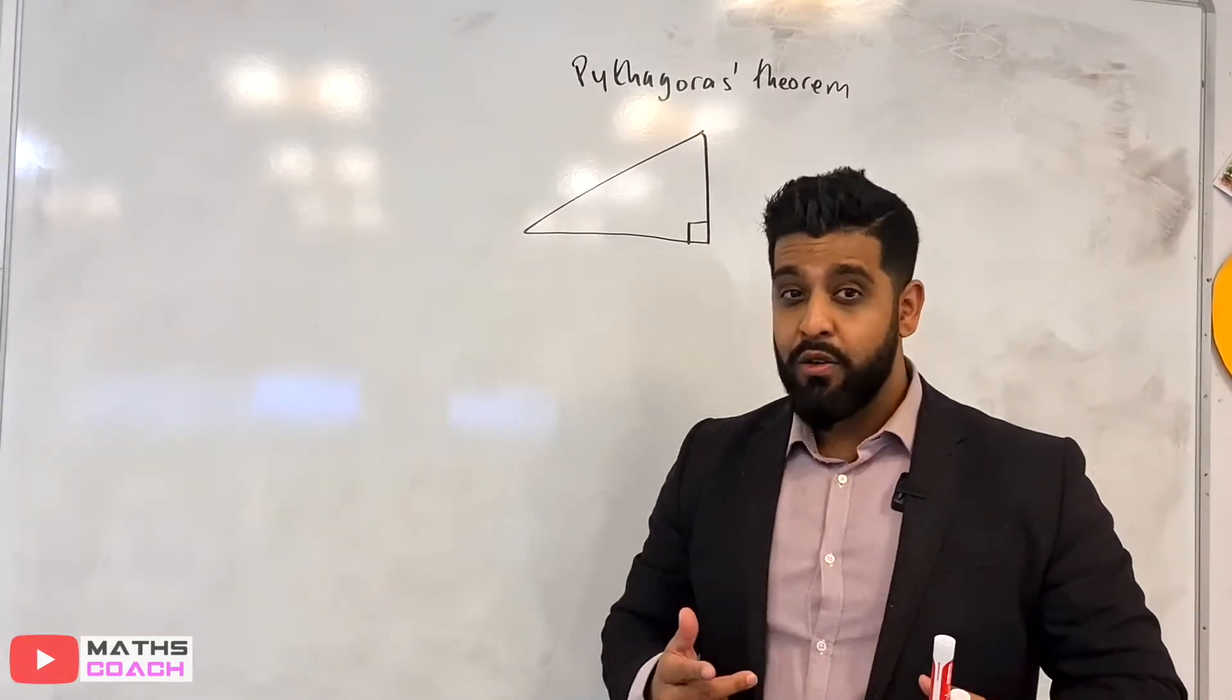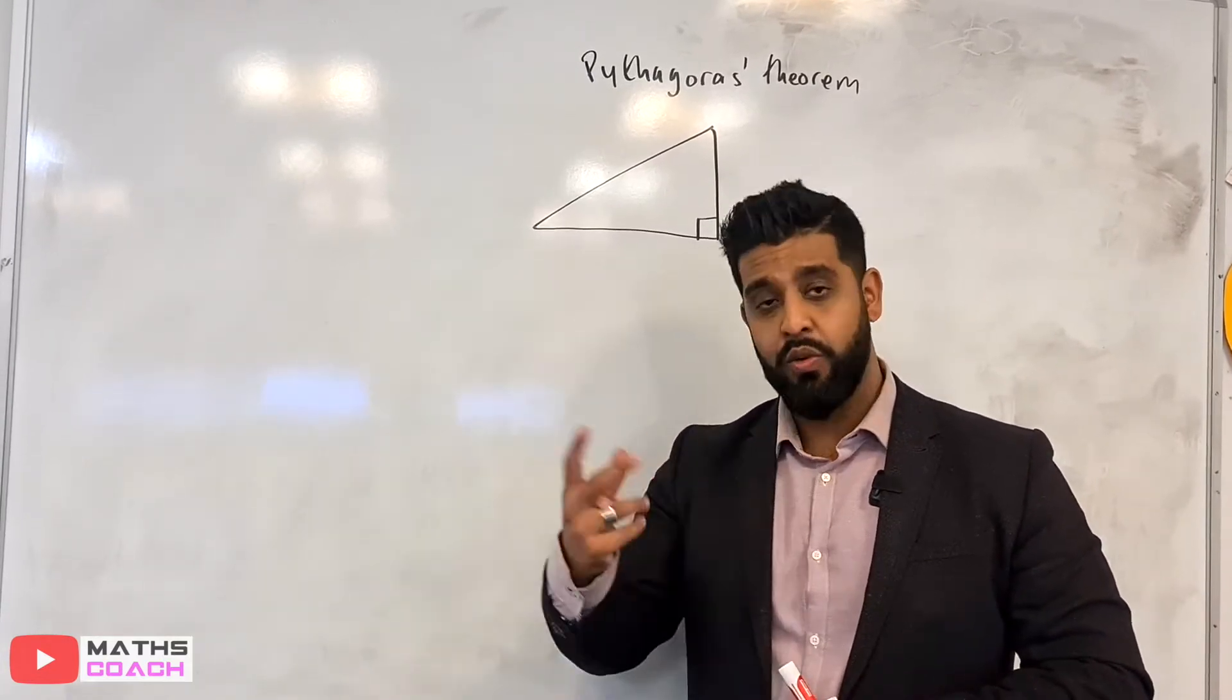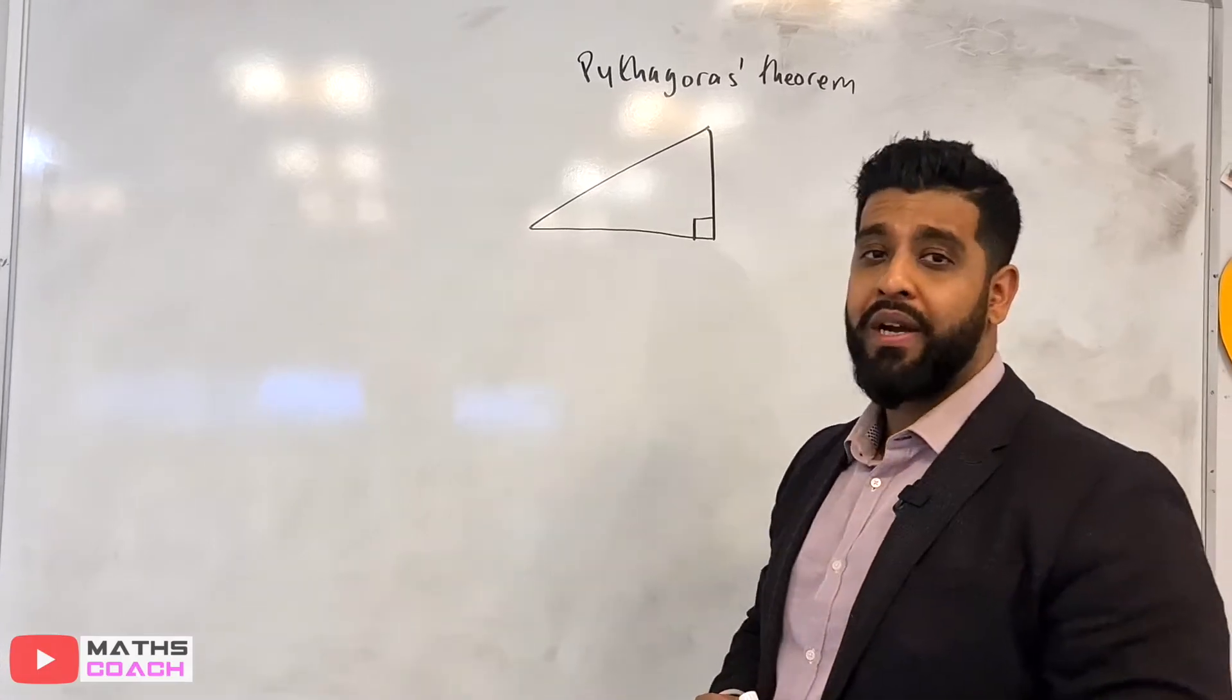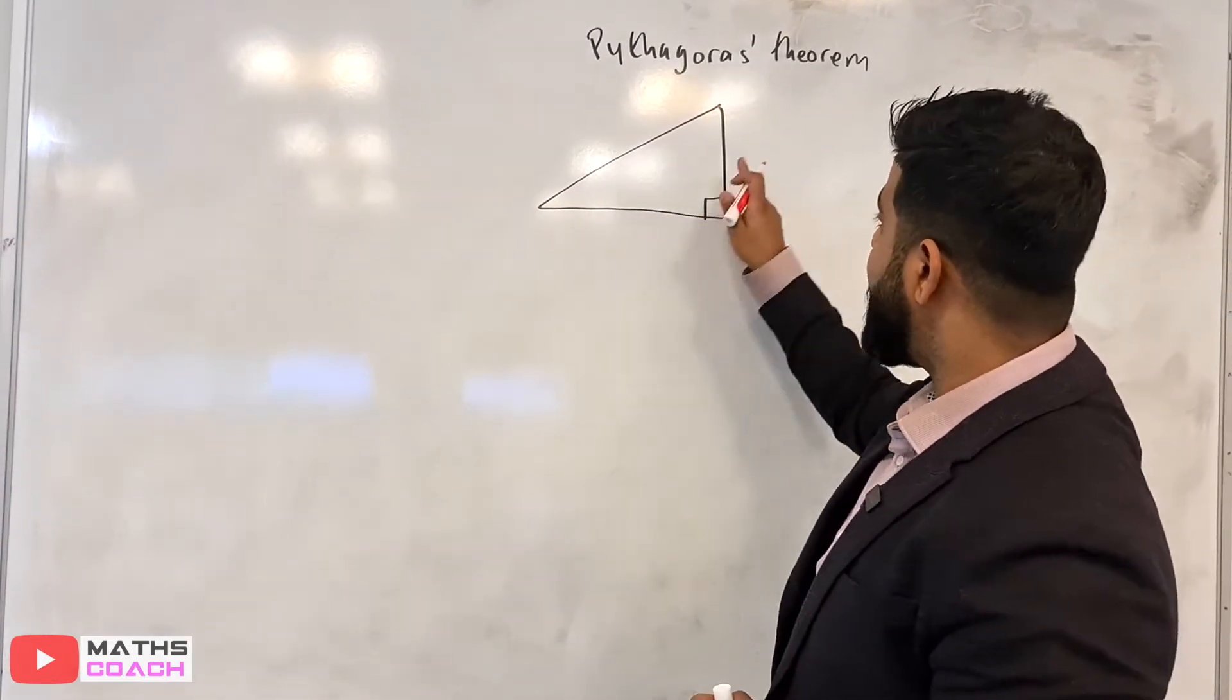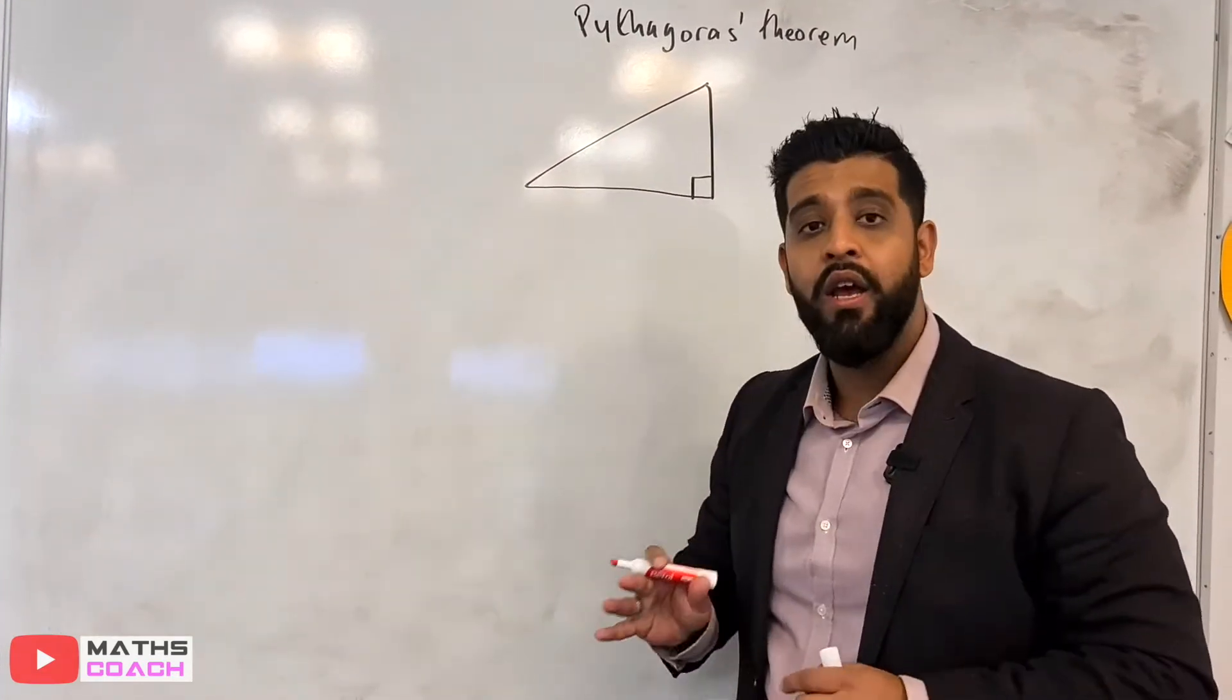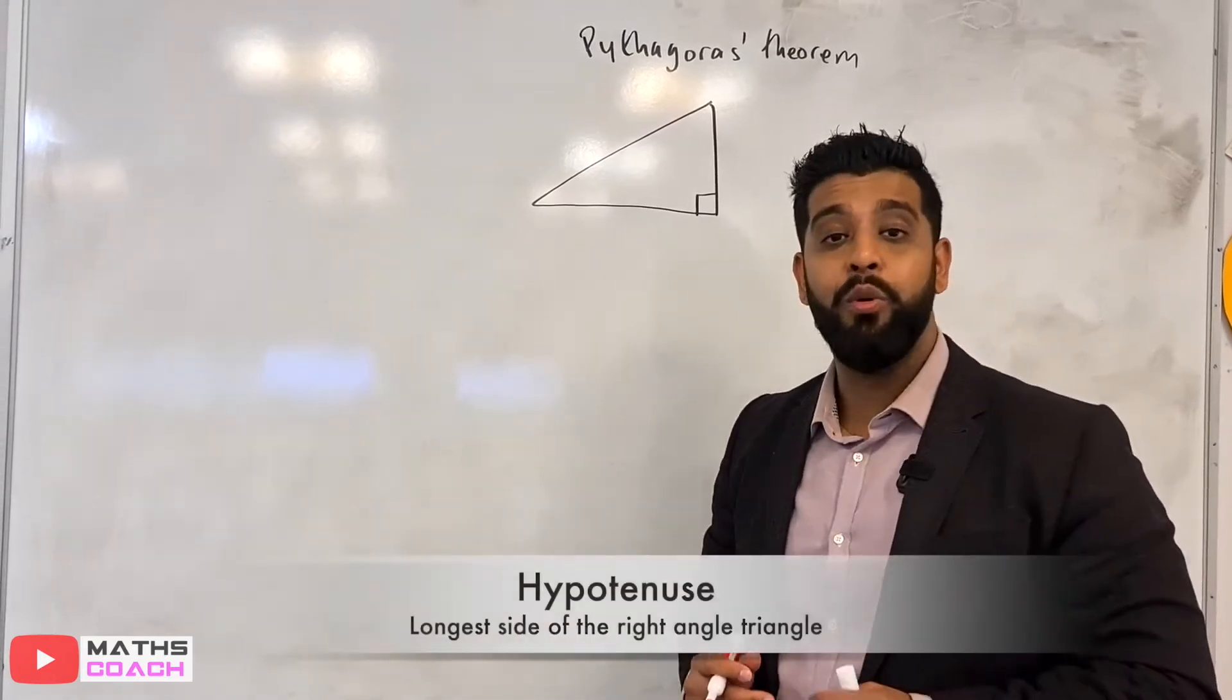If there are any angles involved, then it's usually using trigonometry, which I will deal with in an alternative video. So what is Pythagoras' theorem? Pythagoras' theorem is where Pythagoras has said that if you take the square of two of the smaller sides, then it should give you the square of the larger or the longer side, which we call the hypotenuse.